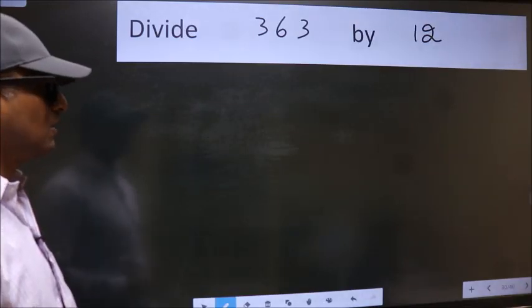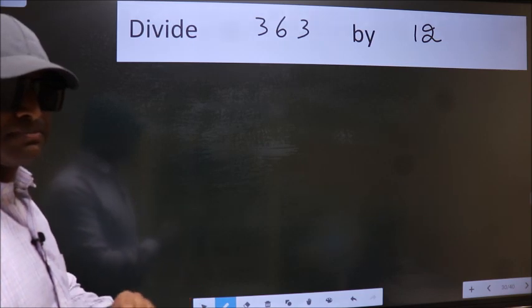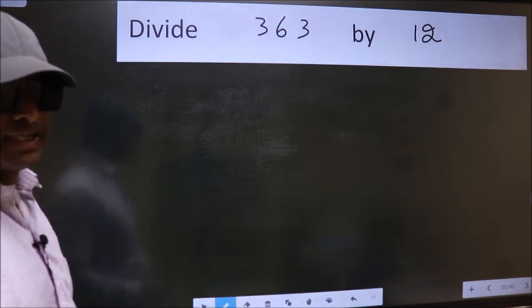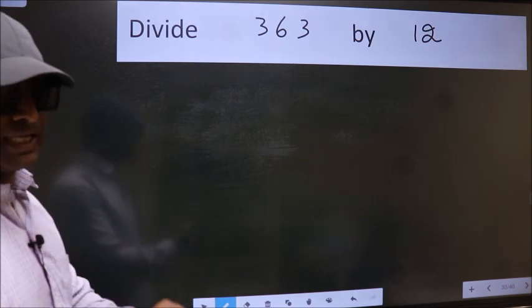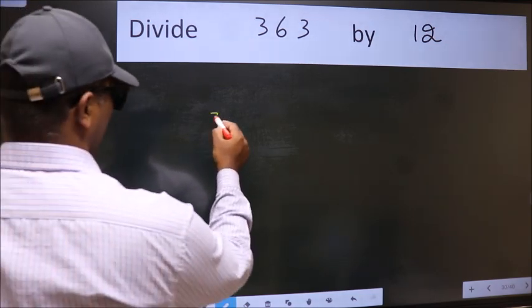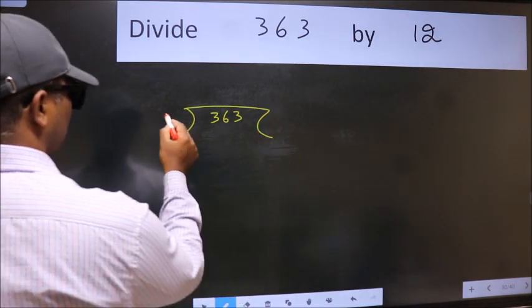Divide 363 by 12. While doing this division, many do this mistake. What is the mistake that they do? I will let you know. But before that, we should frame it in this way. 363 here, 12 here.